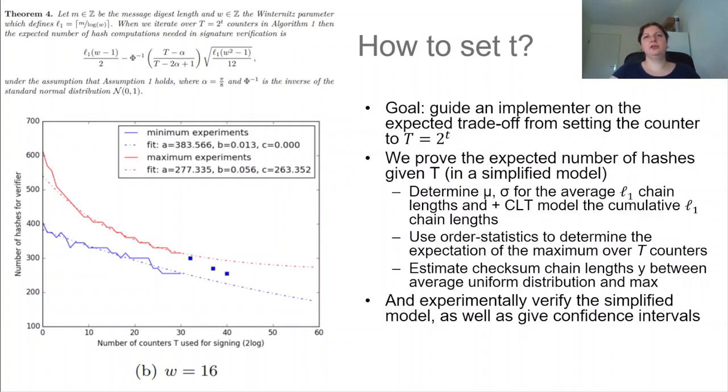And then lastly, we trade the chain lengths for the checksum a bit differently since they behave in a kind of special way. But then we show that all three of these are quite solid assumptions in the paper.